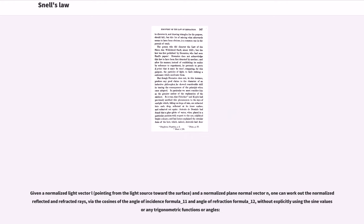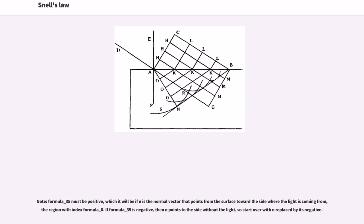Given a normalized light vector L and a normalized plane normal vector N, one can work out the normalized reflected and refracted rays via the cosines of the angle of incidence formula underscore 11 and angle of refraction formula underscore 12, without explicitly using the sine values or any trigonometric functions or angles. Note, formula underscore 35 must be positive, which it will be if N is the normal vector that points from the surface toward the side where the light is coming from, the region with index formula underscore 6. If formula underscore 35 is negative, then N points to the side without the light, so start over with N replaced by its negative.